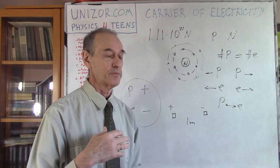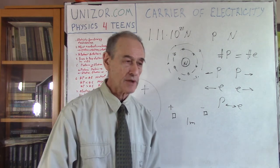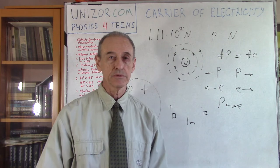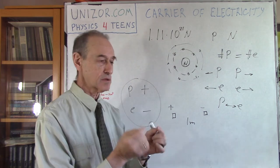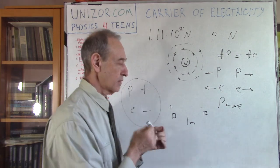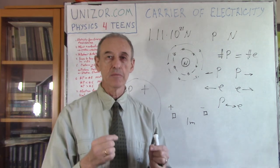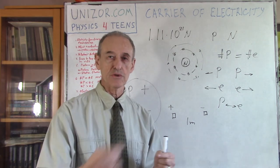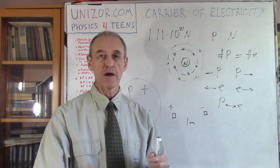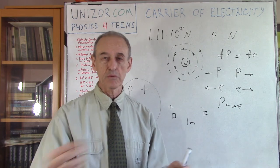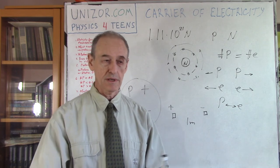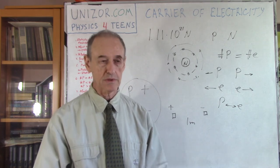Obviously, this is only if we strip all the electrons from one to the other, which never happens. In practical life, we transfer only a very, very tiny amount of electrons when transferring from one object to another, if it's possible to transfer.